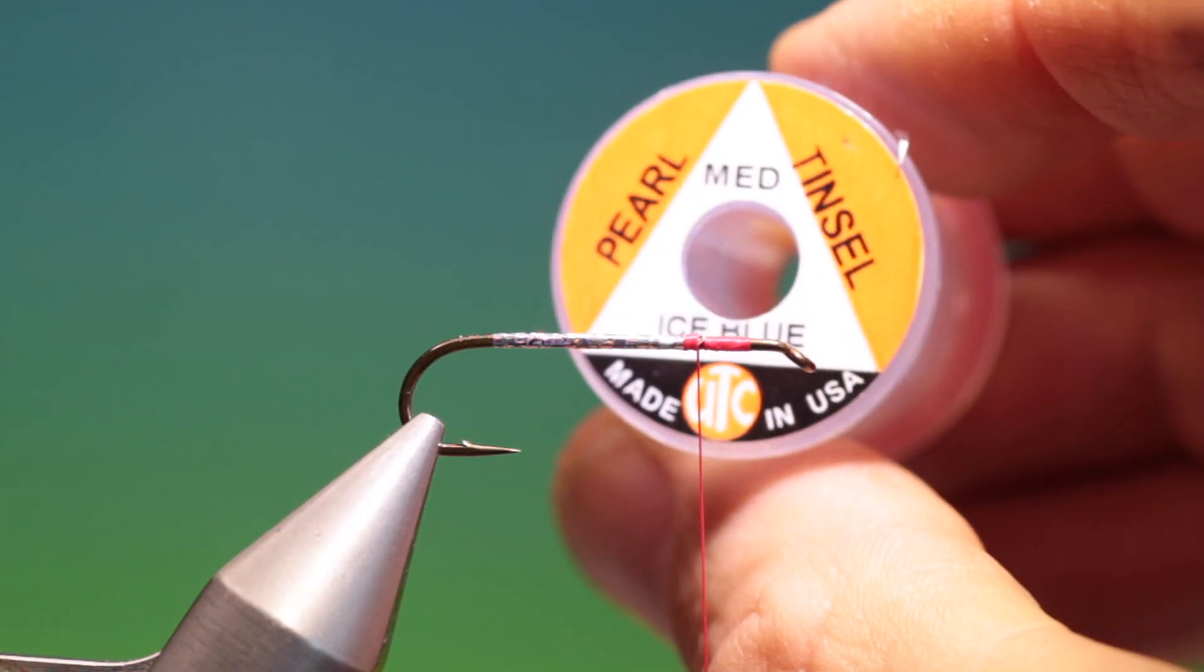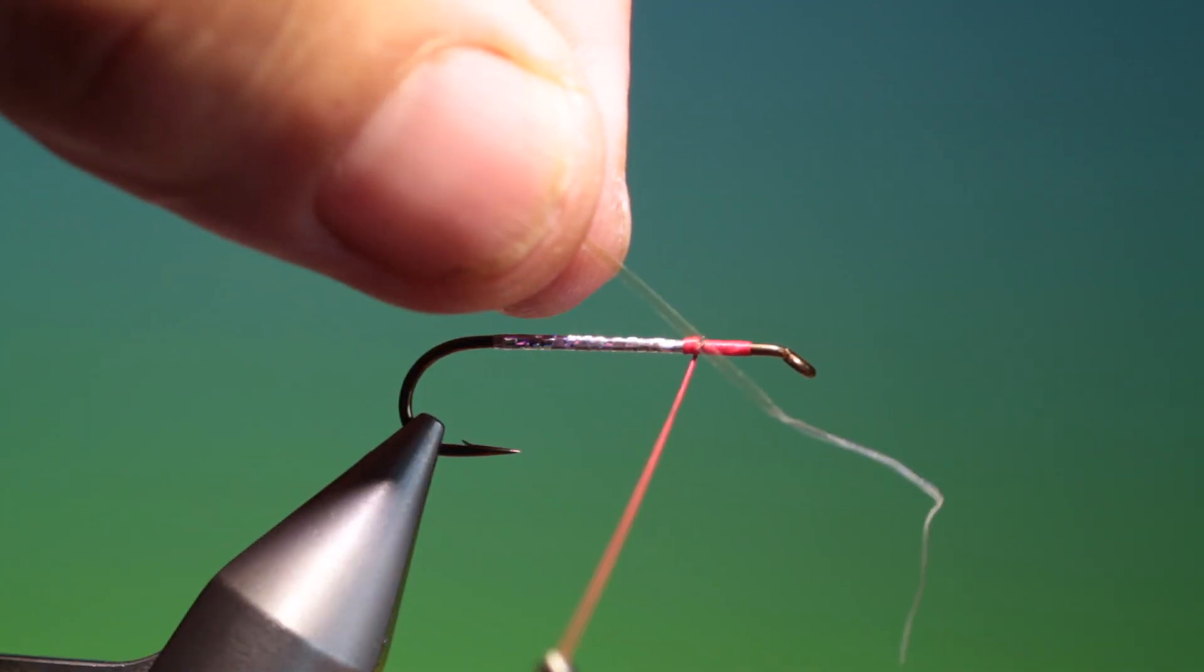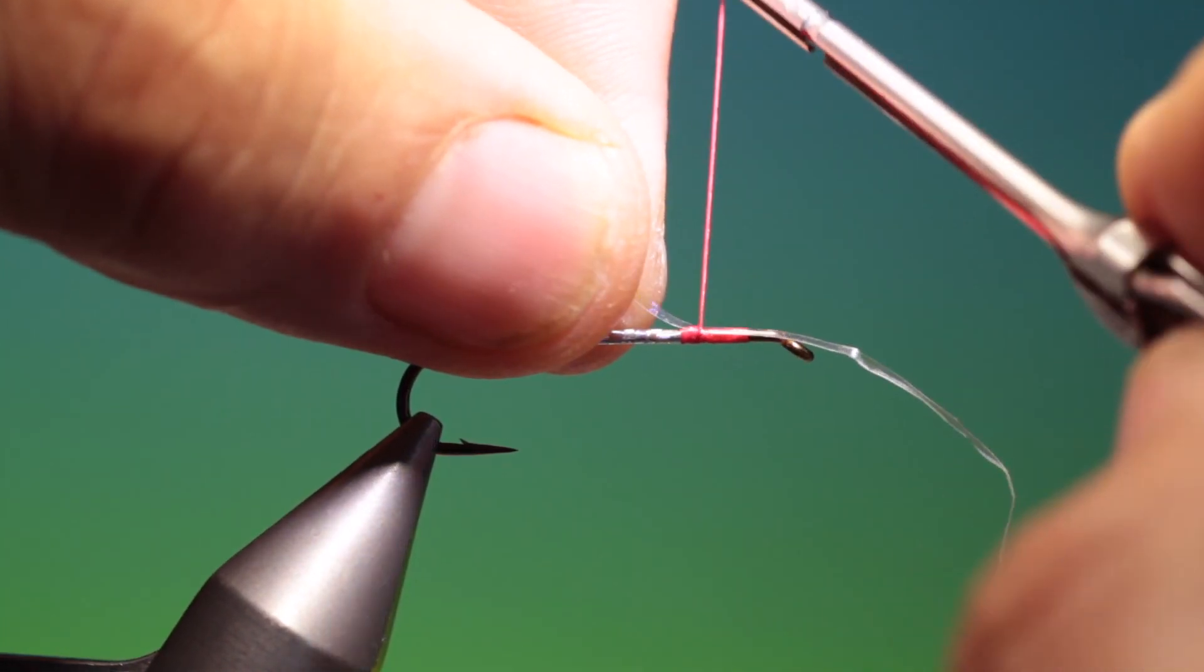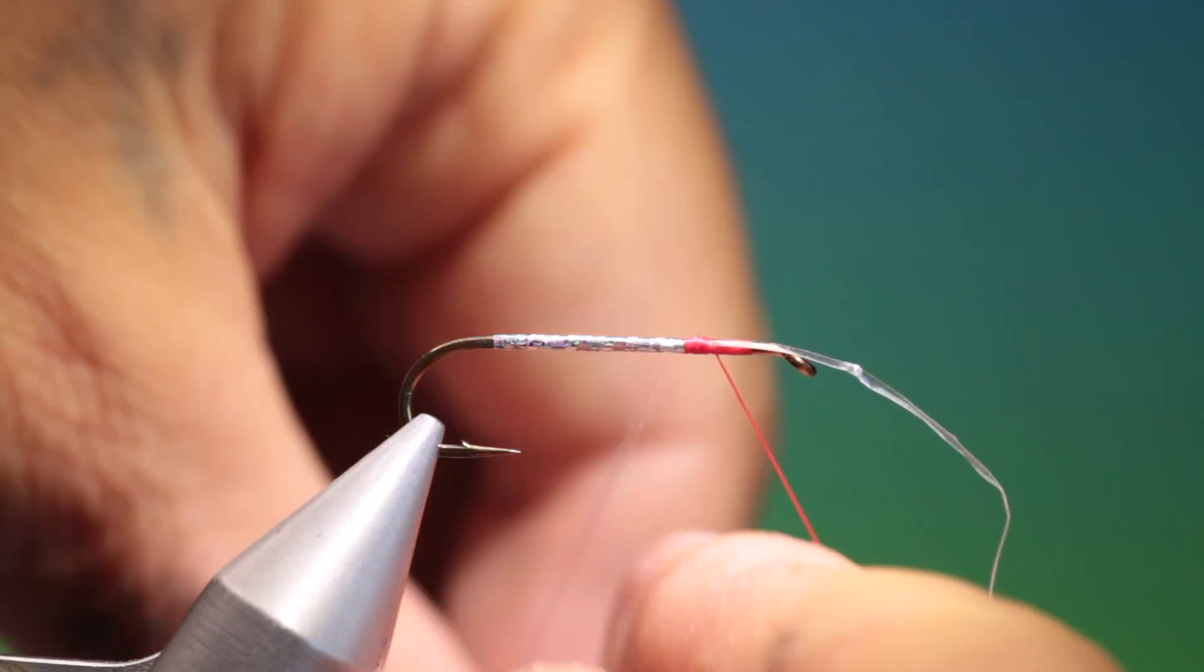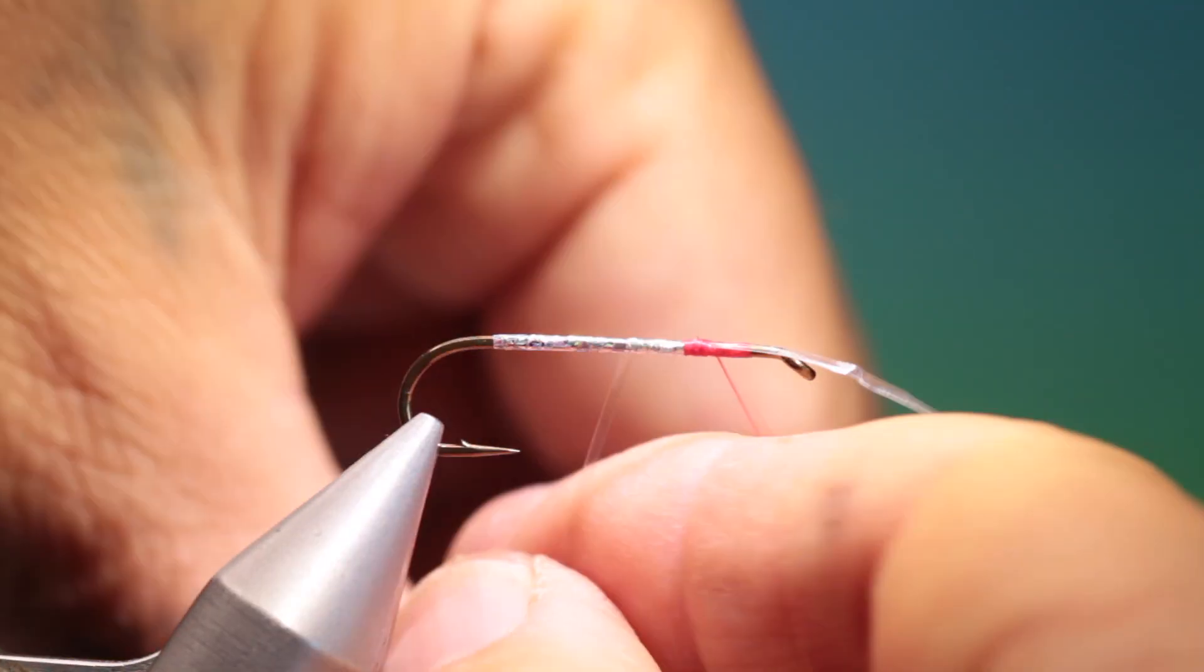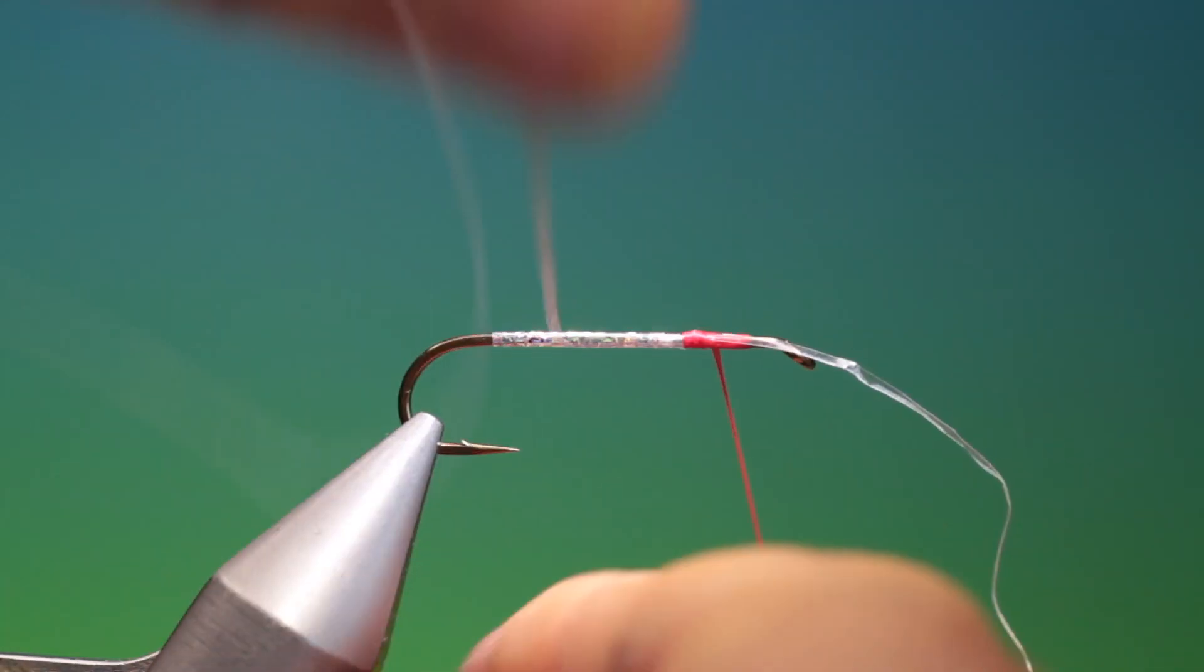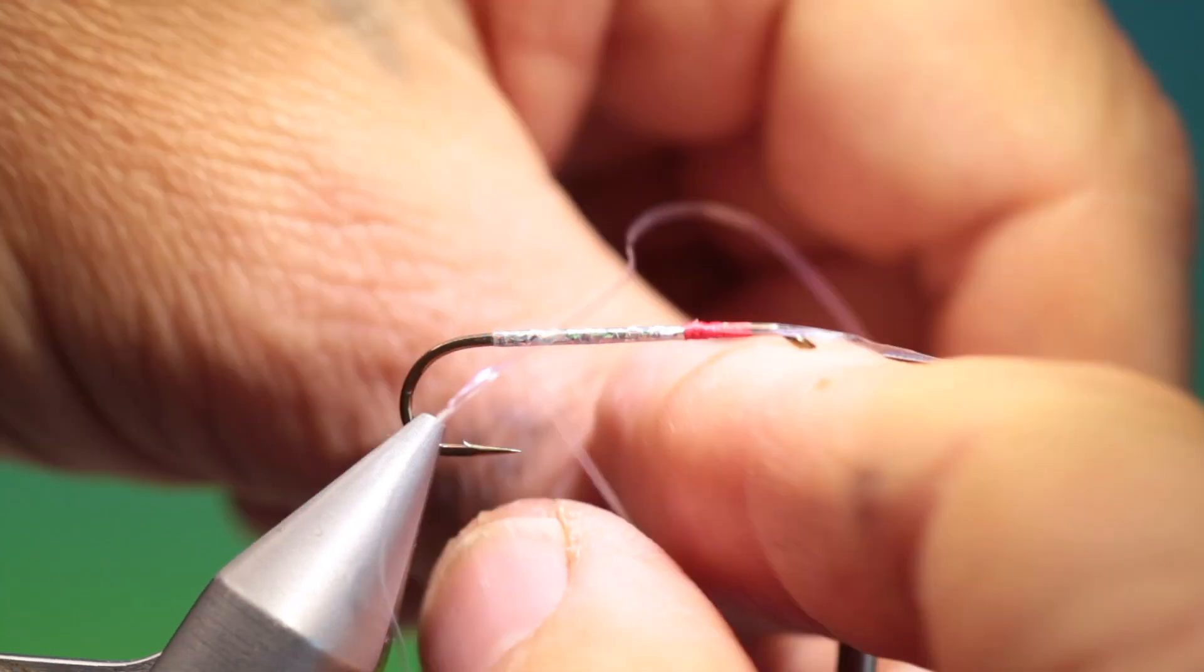Then we need some pearl UTC ice blue tinsel medium. And just tie this in here again. Two or three turns and then we can cover the whole body with this. This gives an extra icy blue flash. It's an extremely robust pattern this. It's more or less indestructible once it's tied correctly.